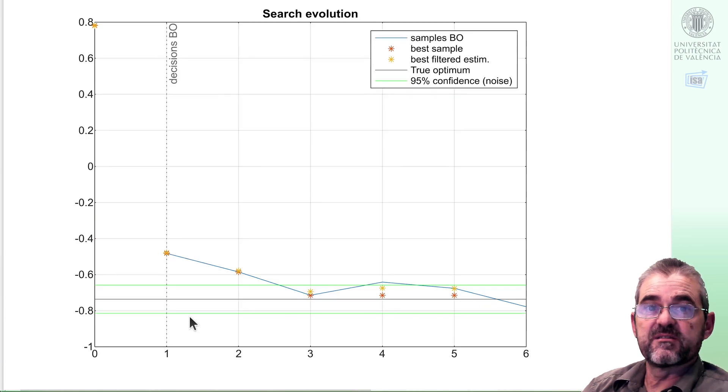If we represent the progress then I have the horizontal line with the actual optimum and two measurement noise standard deviation confidence bands in green. So after a couple of decisions exploring towards the optimal direction, the third sample suggested by the Bayesian optimization is basically at the optimum within the confidence interval given by measurement noise. So Bayesian optimization has performed very well in this example.